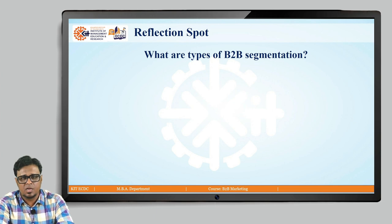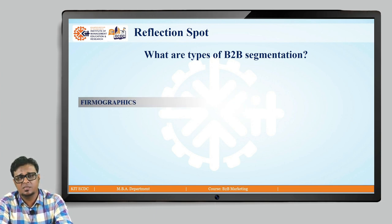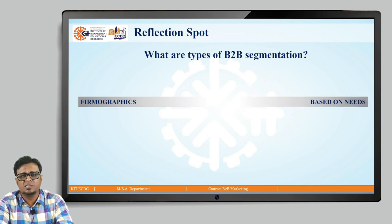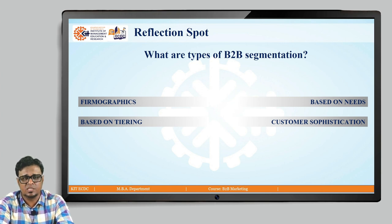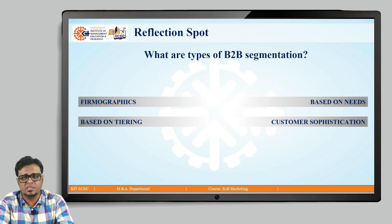Let us go to the reflection spot: what are the types of B2B segmentation? The first one is firmographics, the second is based on needs, the third is based on tiering, and the fourth is customer sophistication. So this concludes B2B segmentation. Thank you.